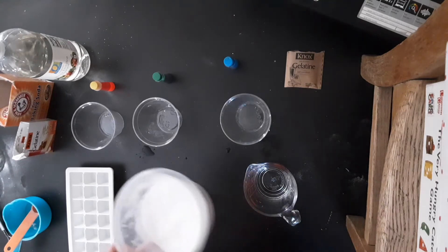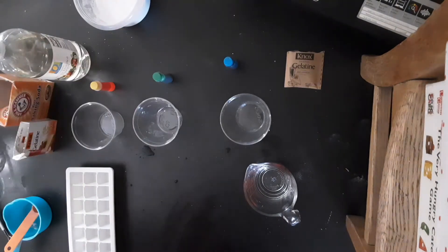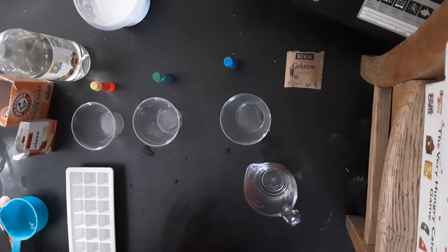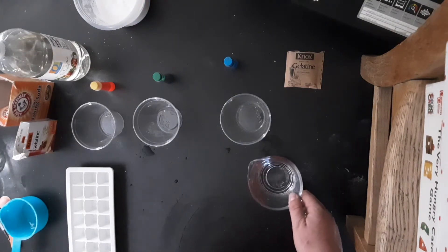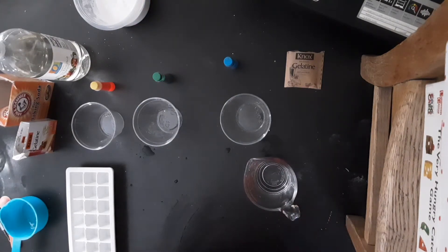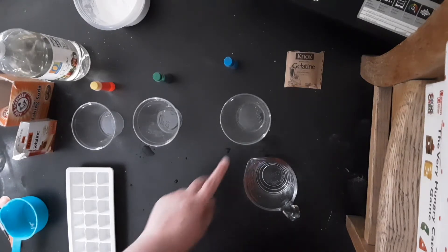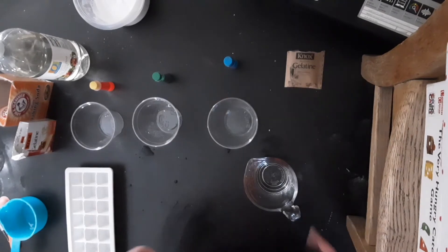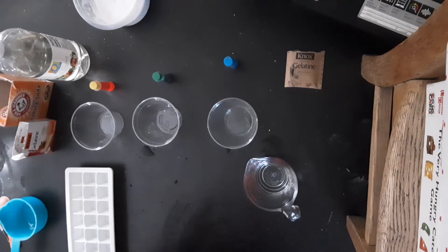So once this is mixed up we can set that aside and now this is the fun part where we get to add the colors. So if you're just doing one color that's simple enough. You have one container, one color, and a quarter cup of water. When you want to start doing multiple colors that's when you have a little bit of math.